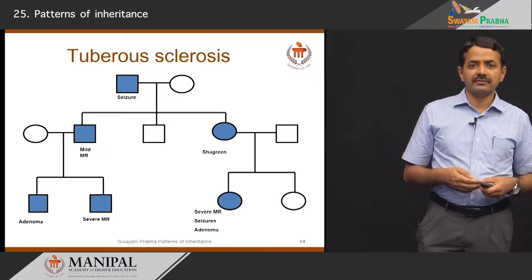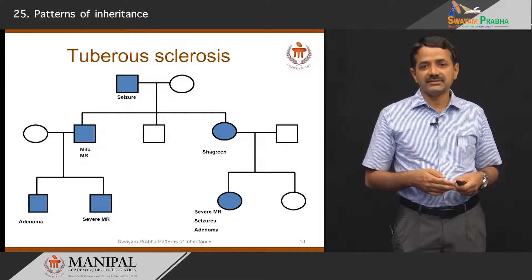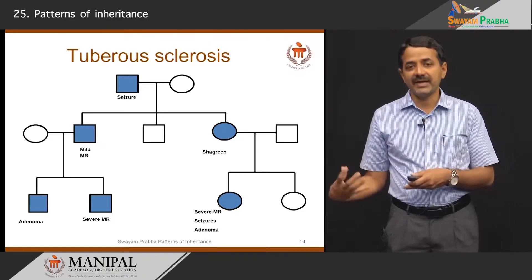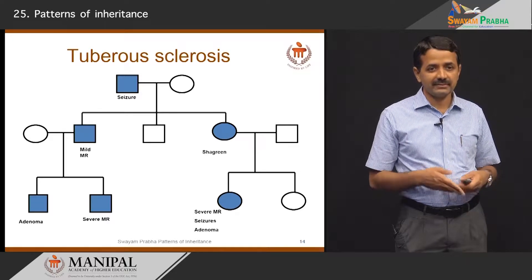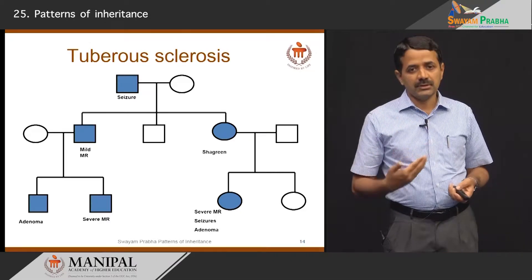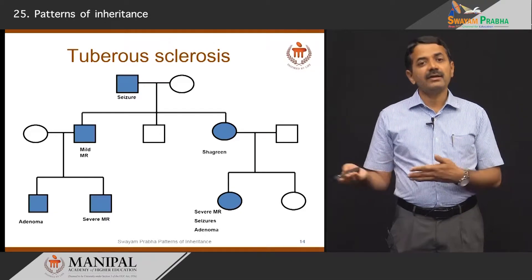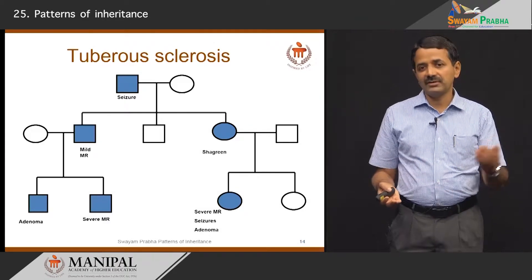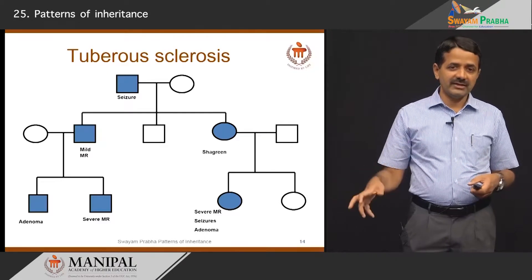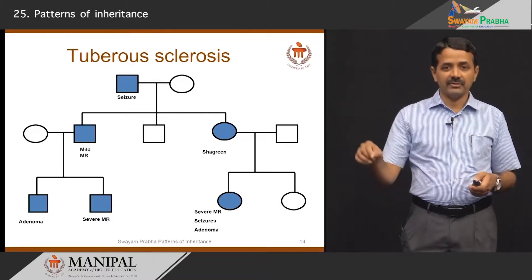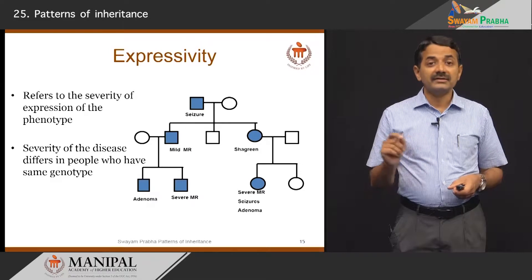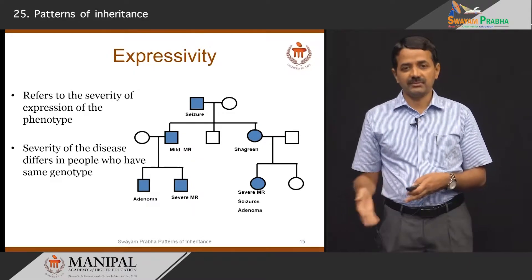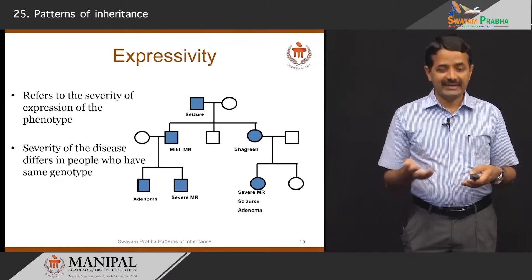I have drawn a pedigree of a family with tuberous sclerosis, a common neurocutaneous disorder with multiple skin lesions and possible intellectual disability. In this family, somebody has seizures, somebody has a shagreen patch on the skin, somebody has mild intellectual disability, somebody has severe adenoma sebaceum — small lesions around the nose — and one member might have all three manifestations. You can see variable severity of the disease in the same family even though all affected members carry the same pathogenic variant. This phenomenon is called variable expressivity — the severity of phenotypic expression differs among people with the same genotype.